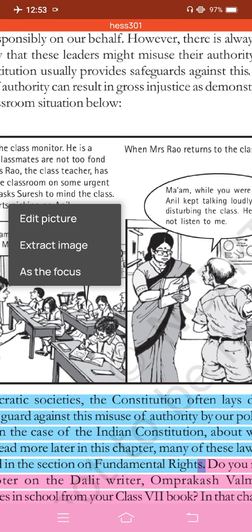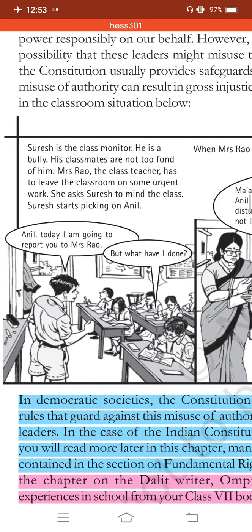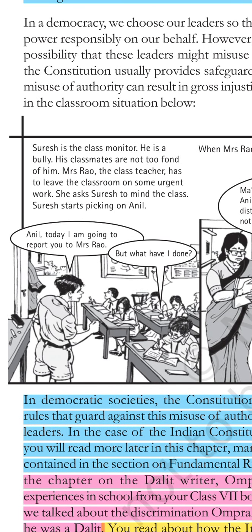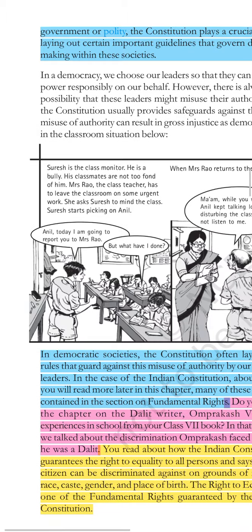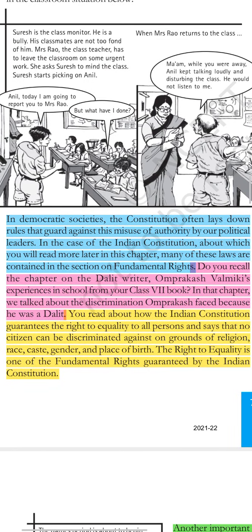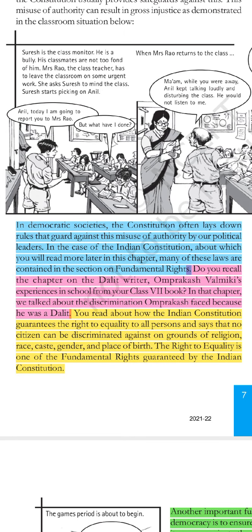We have seen the class monitor example, where it was a kind of monarchy, a kind of 'tana shah', a kind of rule in class. After completing this portion, we are going to read the next portion — the light blue color portion: in democratic societies, the constitution often lays down rules that guard against this misuse of authority by our political leaders.